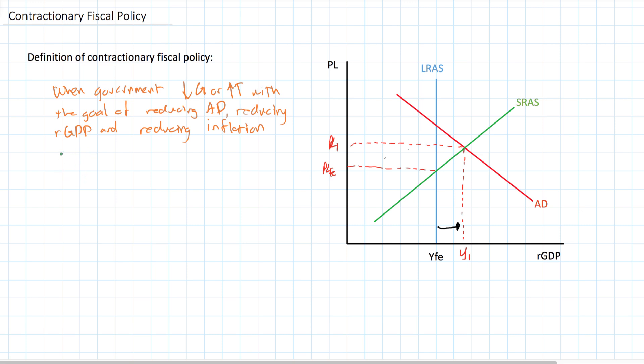So to do so, the government could raise taxes, increase the level of taxation on households and firms. Let's walk through the mechanism by which an increase in taxes would help restore full employment in this country.